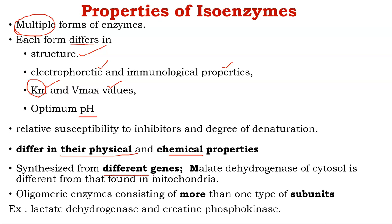Isoenzymes are synthesized from different genes. For example, malate dehydrogenase is present both in the cytoplasm and in the mitochondria — the cytosolic form is encoded by one gene and the mitochondrial form by another. Isoenzymes are usually oligomeric in nature, meaning they contain more than one type of subunit. Examples include lactate dehydrogenase, malate dehydrogenase, and creatine phosphokinase.